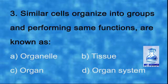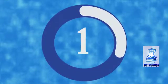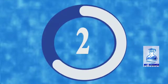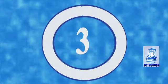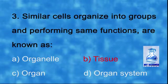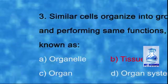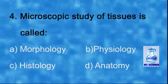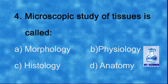Number three: similar cells organized into groups and performing the same functions are known as — a) organelle, b) tissue, c) organ, d) organ system. The correct option is b) tissue.